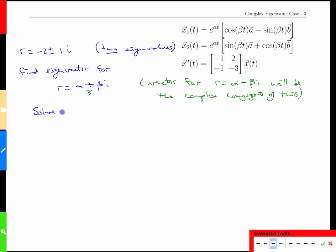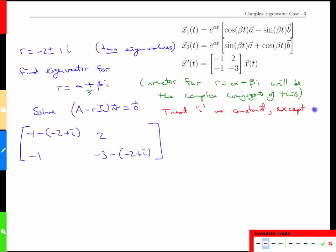What we need to solve is (A - rI) times some vector v equals the zero vector. That gives us [-1 - (-2 + i), 2; -1, -3 - (-2 + i)]. So we just treat i as a constant that we can't really simplify except when we get i². When we get i² we get -1, which is handy. Again, the whole point is i is the square root of -1, so we square it, we get back to -1, and we're just going to try to simplify this, so this has to equal zero. Our matrix then becomes [1 - i, 2; -1, -1 - i].